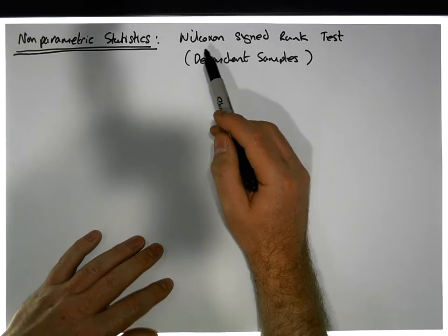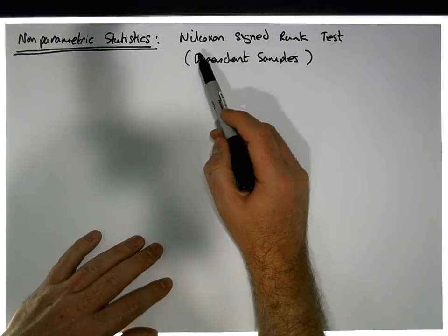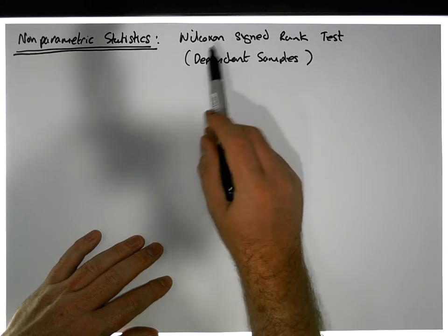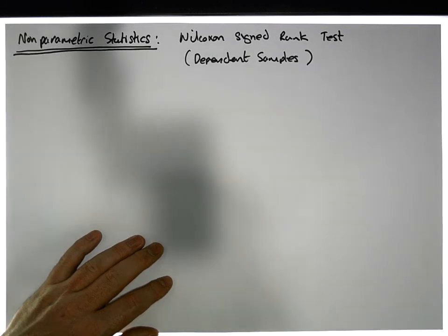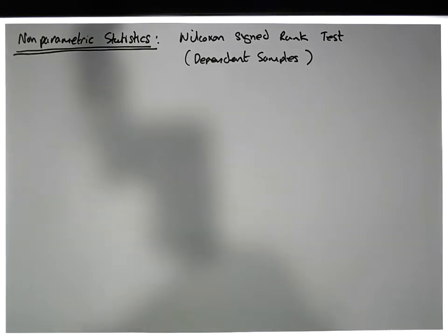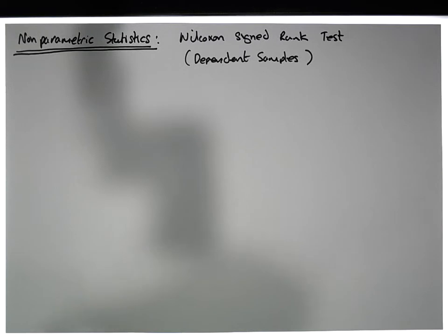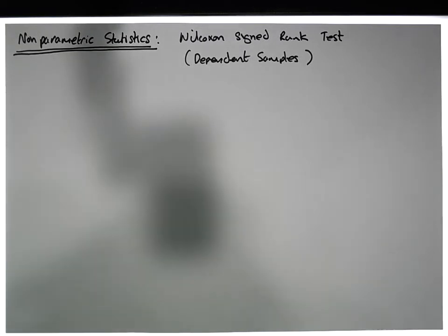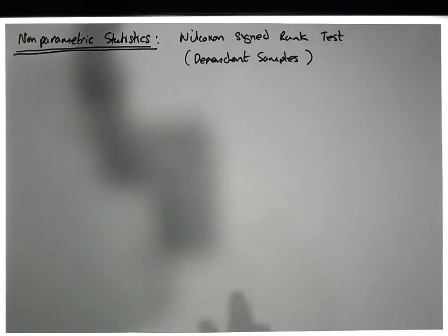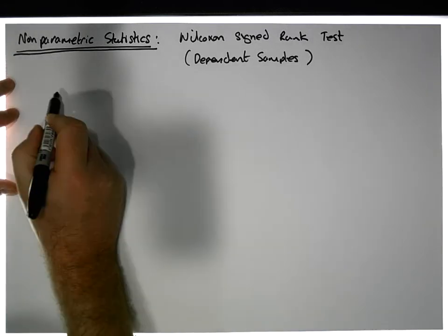This test is equivalent to the dependent samples t-test, but it's used when the assumptions associated with the t-test are violated. I have a video on those assumptions — you can go and have a look at it — covering the assumptions associated with t-tests and ANOVAs. So in this particular example, we're looking at the Wilcoxon signed rank test.